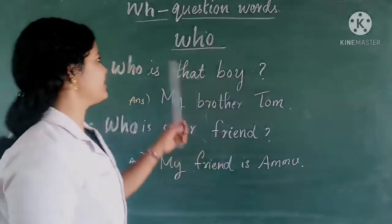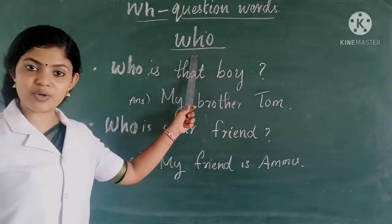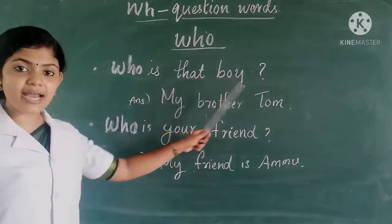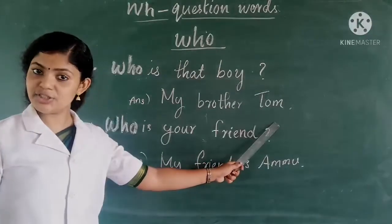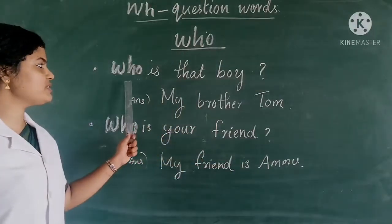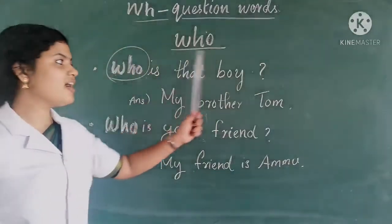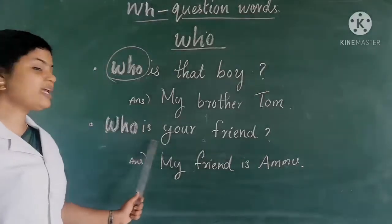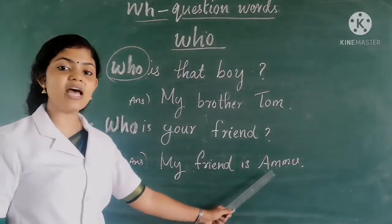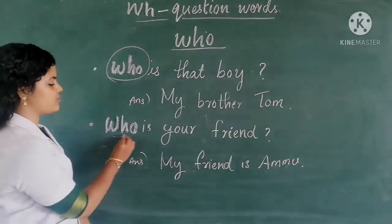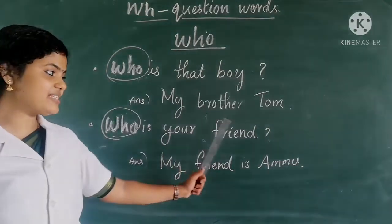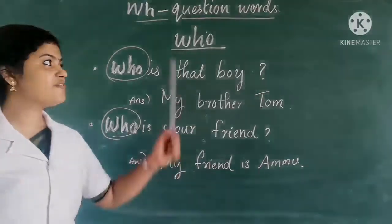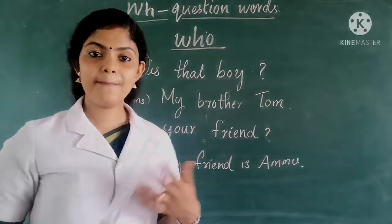The first one we are discussing is WHO. We use this as a question word to ask about people. For example: Who is that boy? Answer — that is my brother Tom. Here we use WHO to ask about a person. Next: Who is your friend? Answer — my friend is Ammu. So we use the question word WHO to ask about people.